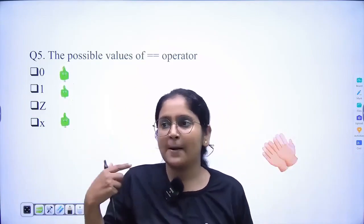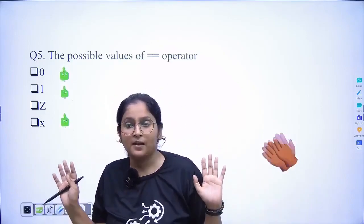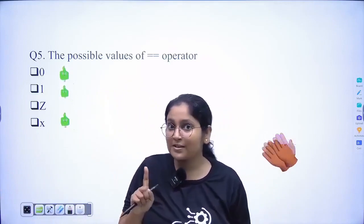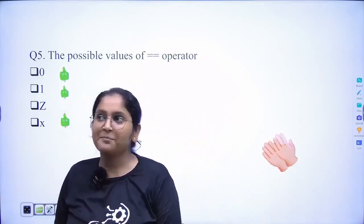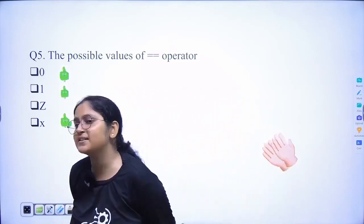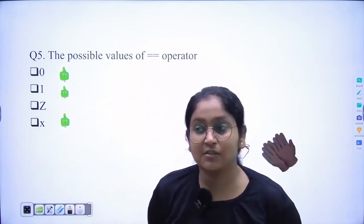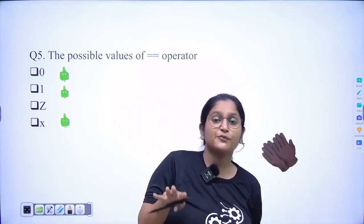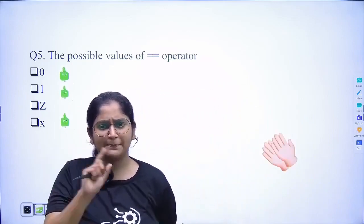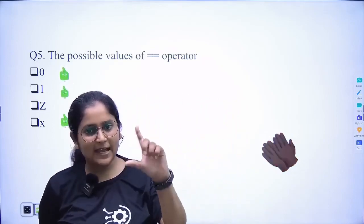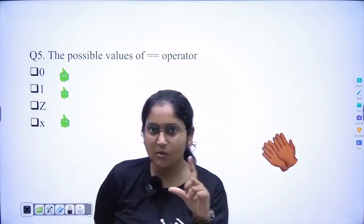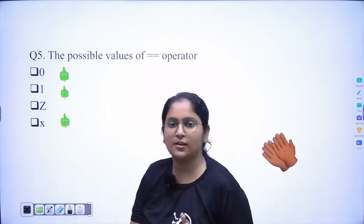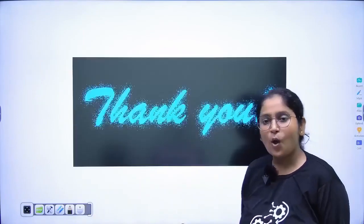In total, we studied around 10 operators so far. We individually covered bitwise, logical, and reduction operators — also called unary operators because they work on a single operand. Then we covered logical operators, followed by replication, concatenation, and conditional operators. We also built a short module for an adder and a simple example of a 2-to-1 multiplexer for checking conditions.